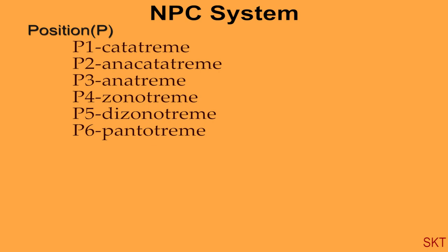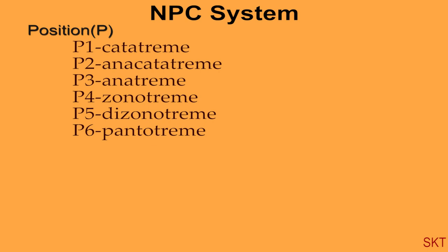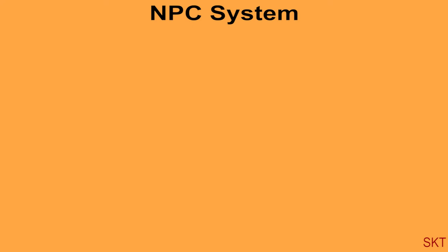So this tells about the position of apertures in pollen grains. Now the third one, that is classification based on character of apertures. Character is denoted by C. There are seven groups from C0 to C6.